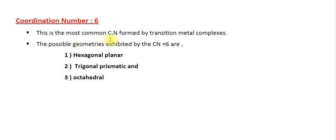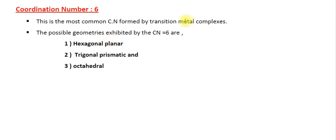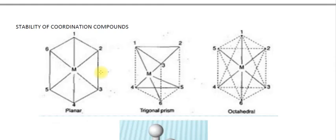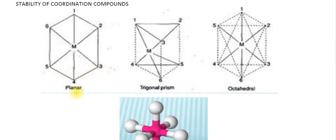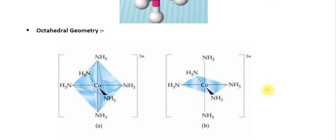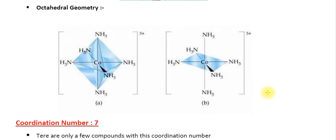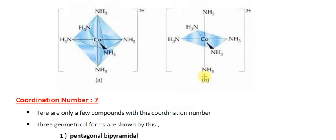Coordination number 6 is the most common coordination number formed by transition metal complexes. The geometries exhibited by coordination number 6 are hexagonal planar, trigonal prismatic, and octahedral. The octahedral geometry is the most common — for example, [Cu(NH₃)₆] where copper is attached to 6 NH₃ ligands. The octahedral geometry can be represented in different ways in structural diagrams.